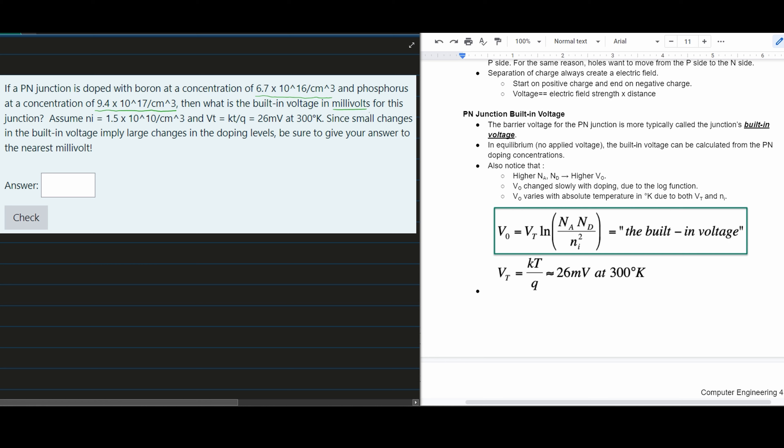We're going to find it in millivolts for the junction. Assume Ni equals 1.5×10¹⁰ per cm³, and Vt equals Kt/Q, which equals 26 millivolts at 300K.